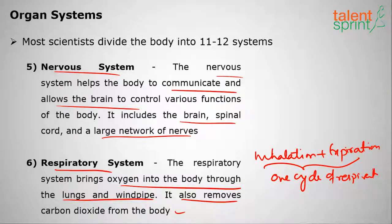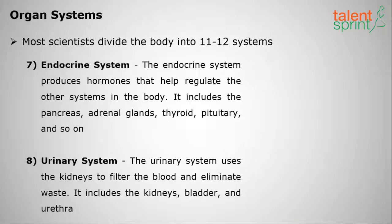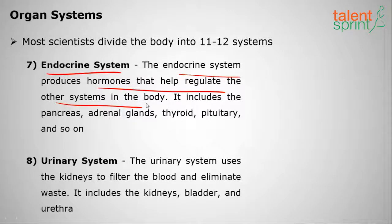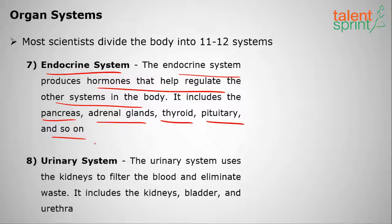The seventh organ system is the endocrine system. It produces and secretes hormones that help regulate the other systems of the body. It includes the pancreas, adrenal glands, thyroid, pituitary, and other glands.